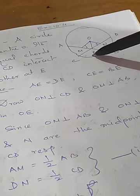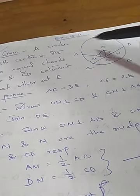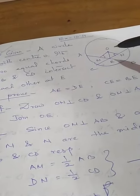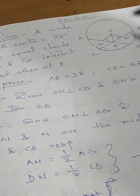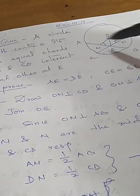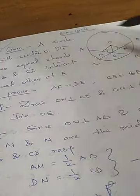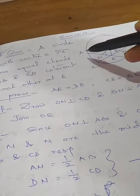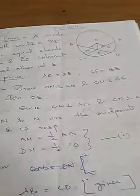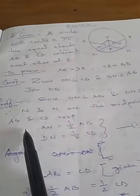You already know the theorem — from class 8 also — that a perpendicular drawn from the center bisects the chord. So OM is perpendicular to chord AB, therefore it bisects AB, giving AM = BM. Since OM is perpendicular to AB and ON is perpendicular to CD, M and N are the midpoints of AB and CD respectively. So AM = ½AB and DN = ½CD — call this statement 1.